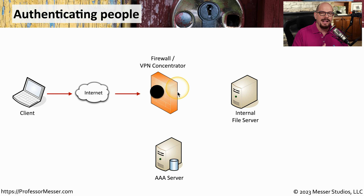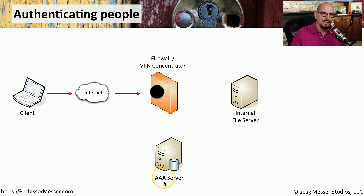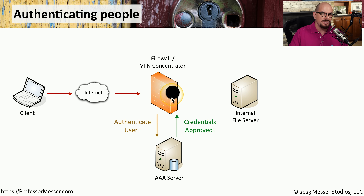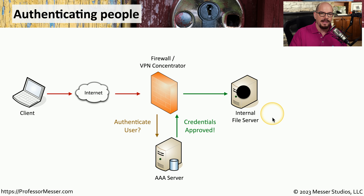The concentrator itself doesn't have any information about usernames, passwords, authentication factors, or anything else. In most organizations, all of that information is stored on a central server, and we refer to that as a AAA server. This AAA server is going to receive the request from the VPN concentrator asking if the username, password, and other information that was provided matches some type of user in the database. And if the match is true, it sends back information to the concentrator and says those credentials are approved. At that point, the concentrator knows that we really are the person we claim to be, and it allows us access into the internal file server.